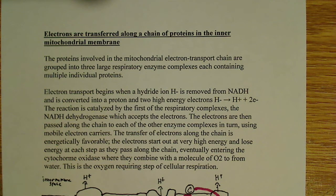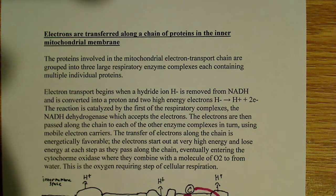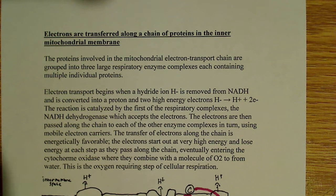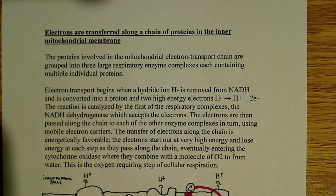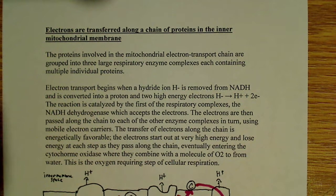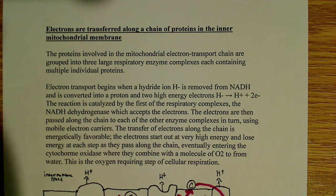Electron transport begins when a hydride ion — so that's a negatively charged H⁻, not a proton — is removed from NADH. NADHs are reduced electron carriers; they carry high-energy electrons. They also have a low affinity for these electrons, so they easily give them up. The NADH has a lower affinity for electrons, so they easily give them up to the first complex.